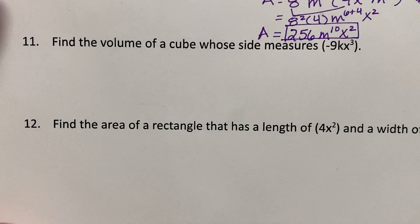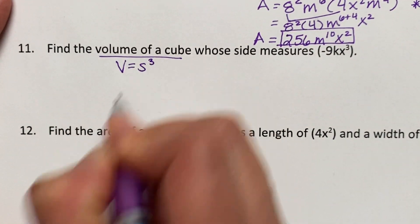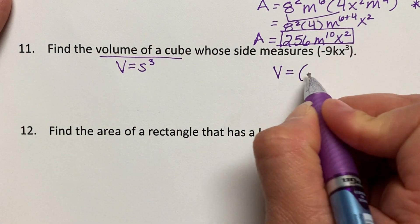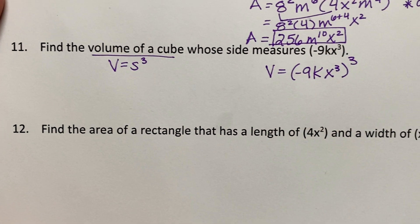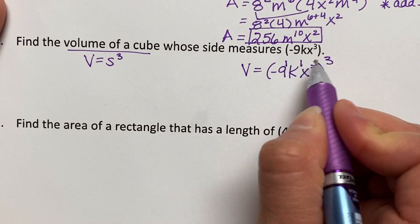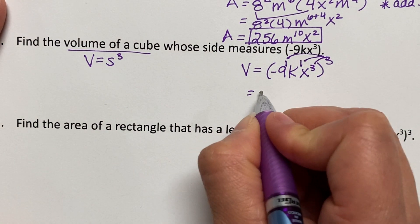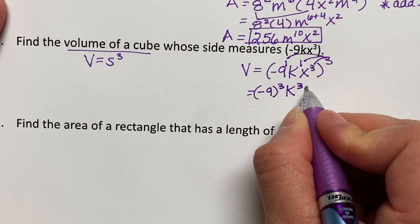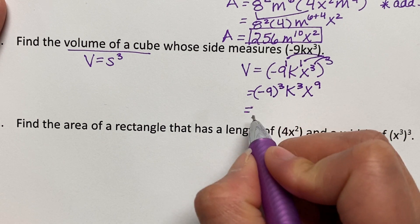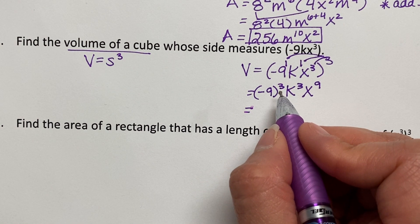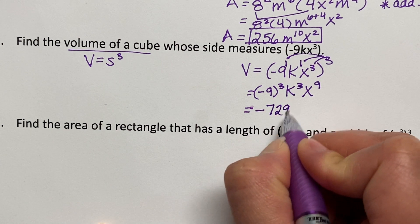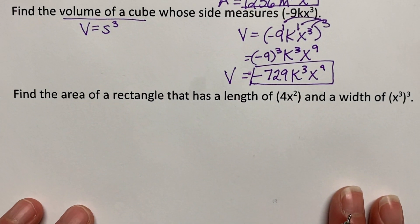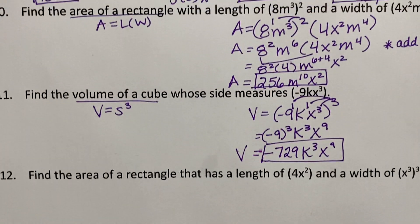In the next example, find the volume of a cube. Volume is the side cubed. If the side measures negative 9kx to the third, raise all of this to the third power. Distribute the exponents: negative 9 cubed, k to the first times three, x to the third times three. Negative 9 cubed is negative 729. Volume equals negative 729k to the third x to the ninth. The last example is similar to number ten, so go ahead and practice on your own.